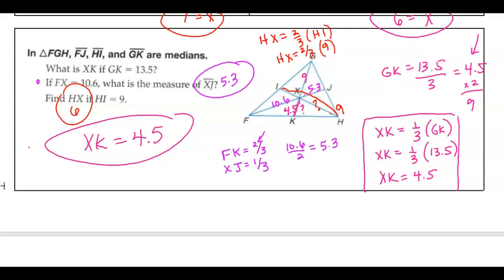Or remember, take that 9, which is the whole thing, divide it by 3, and that's the 1 third. So this bottom part was 3, and then we double it to get the top part, which is 6.